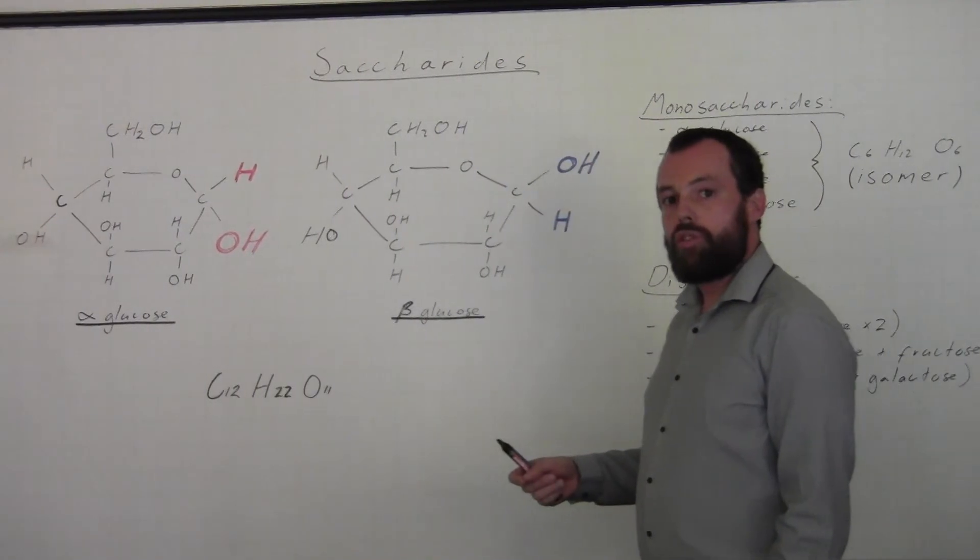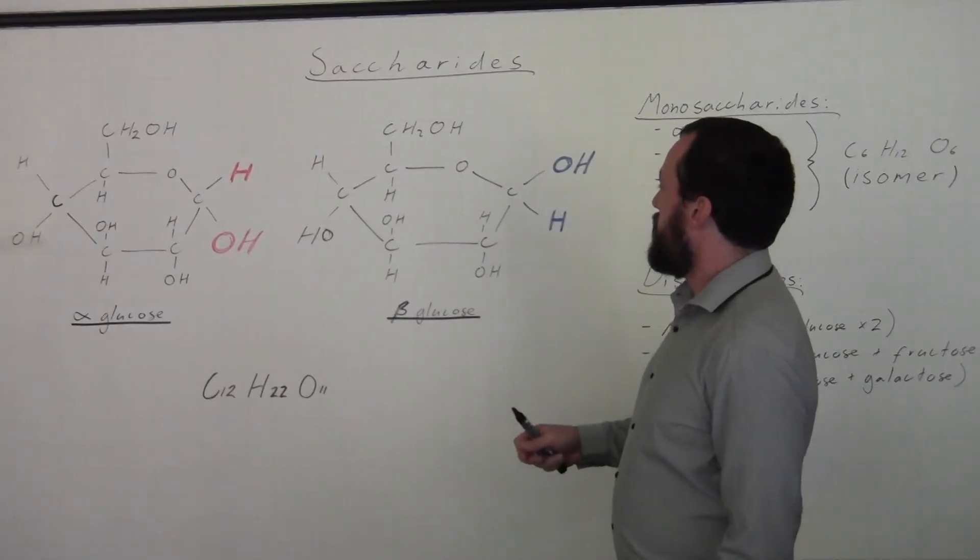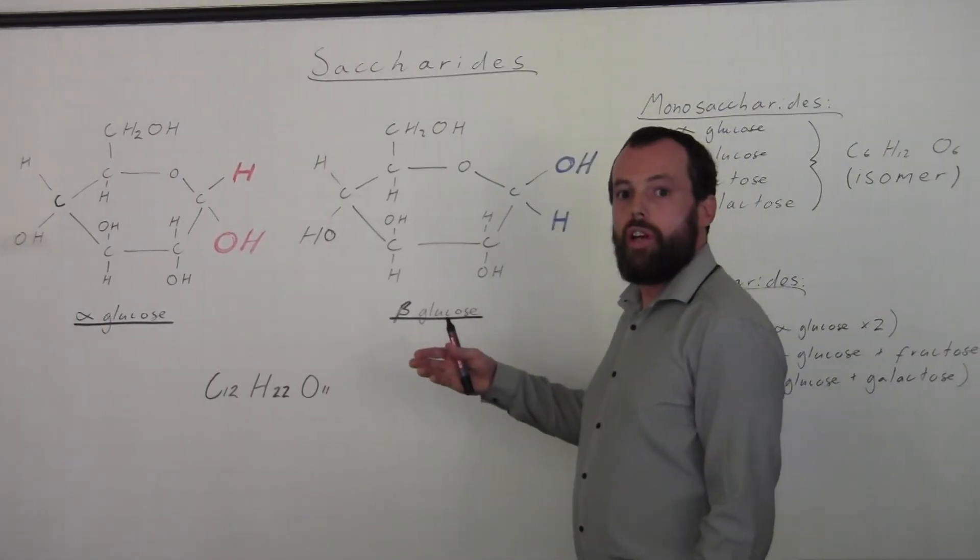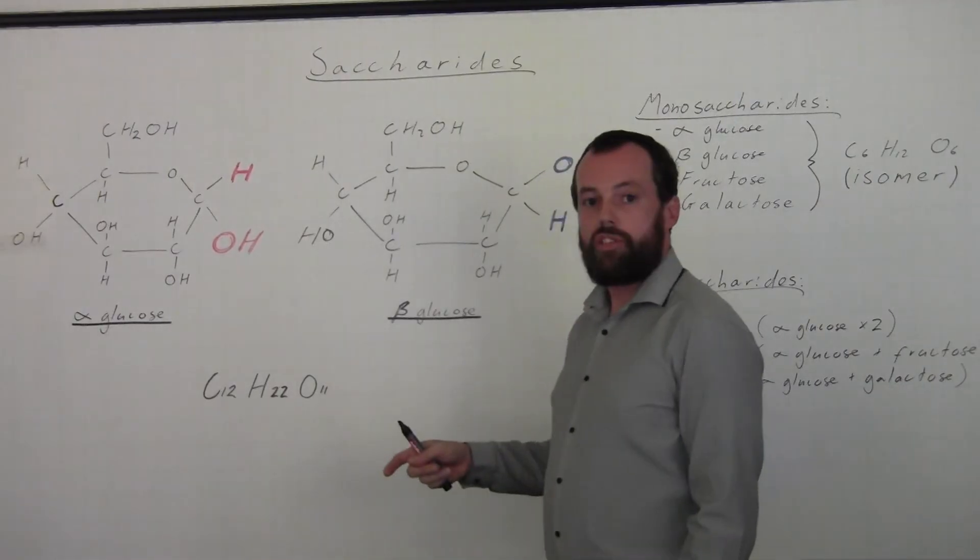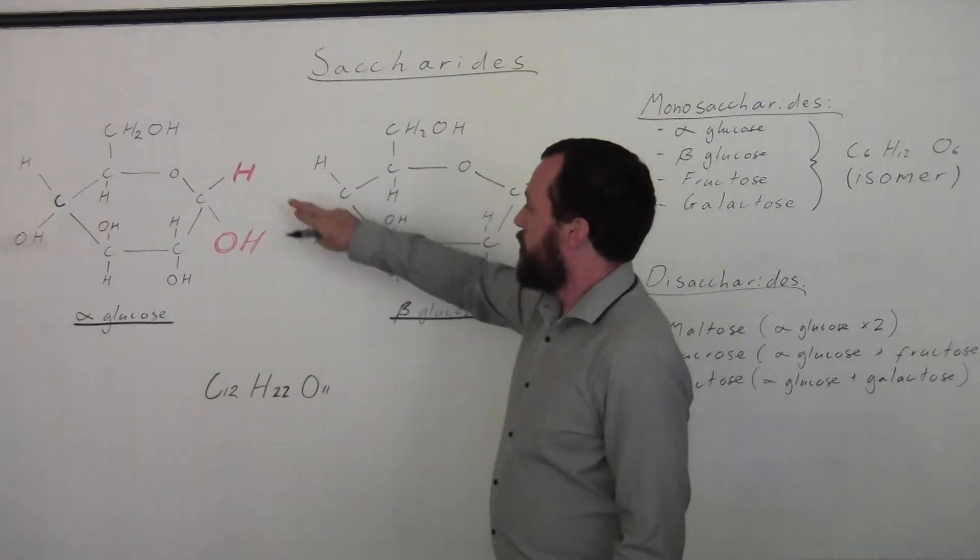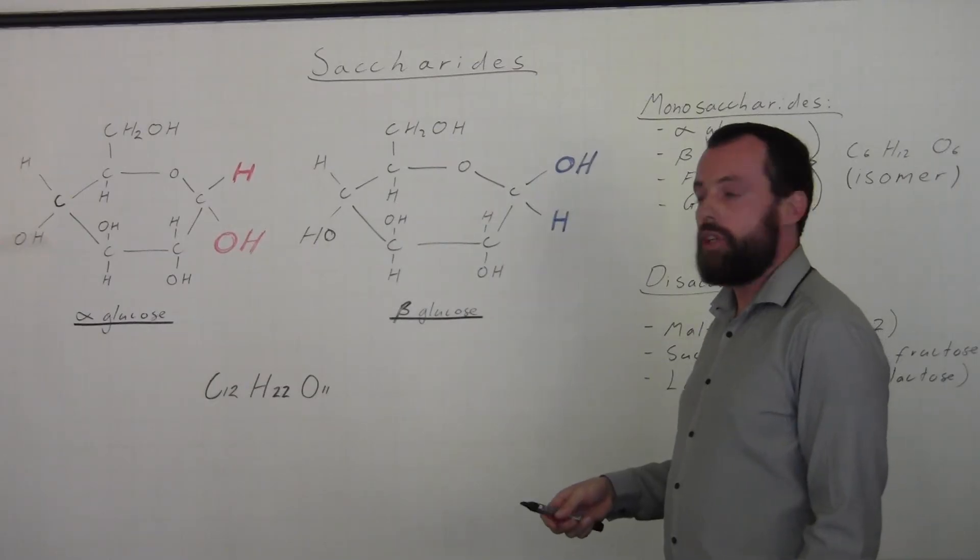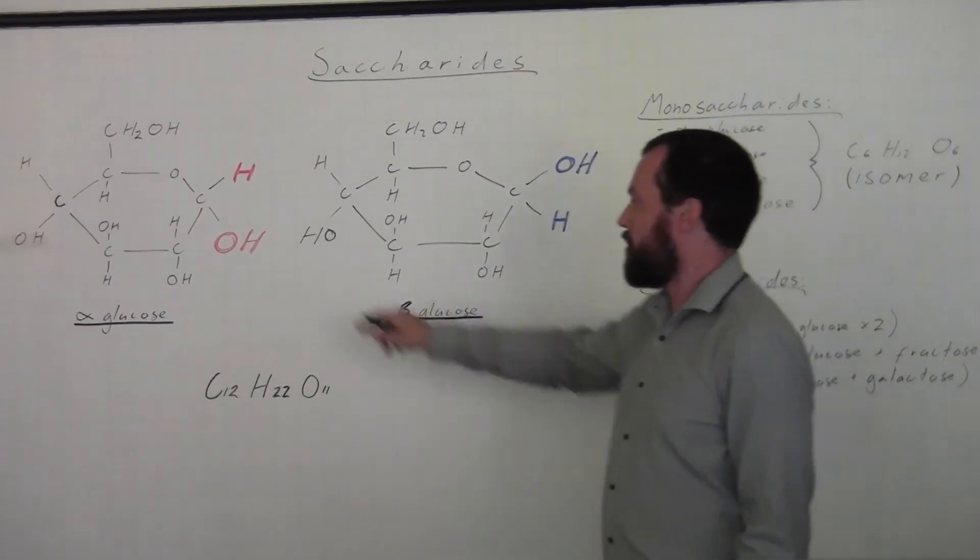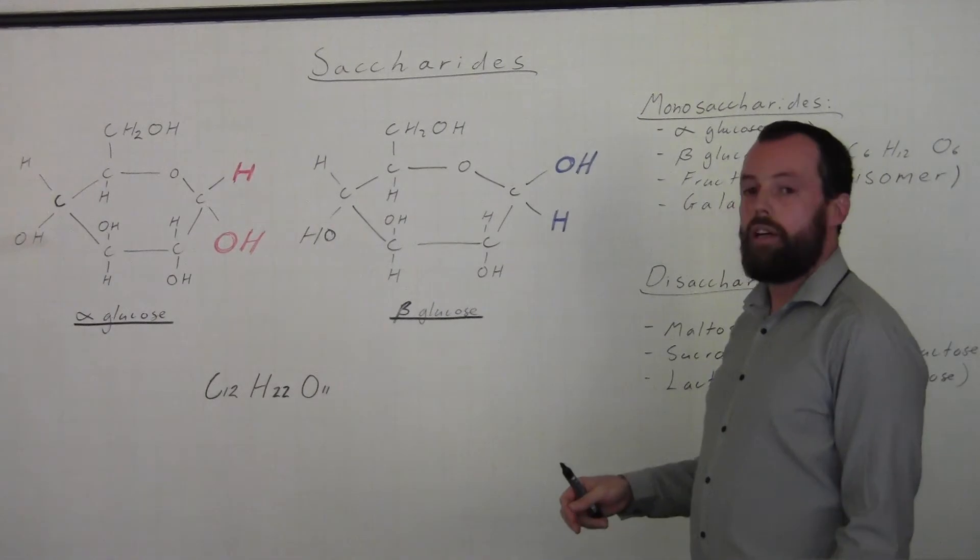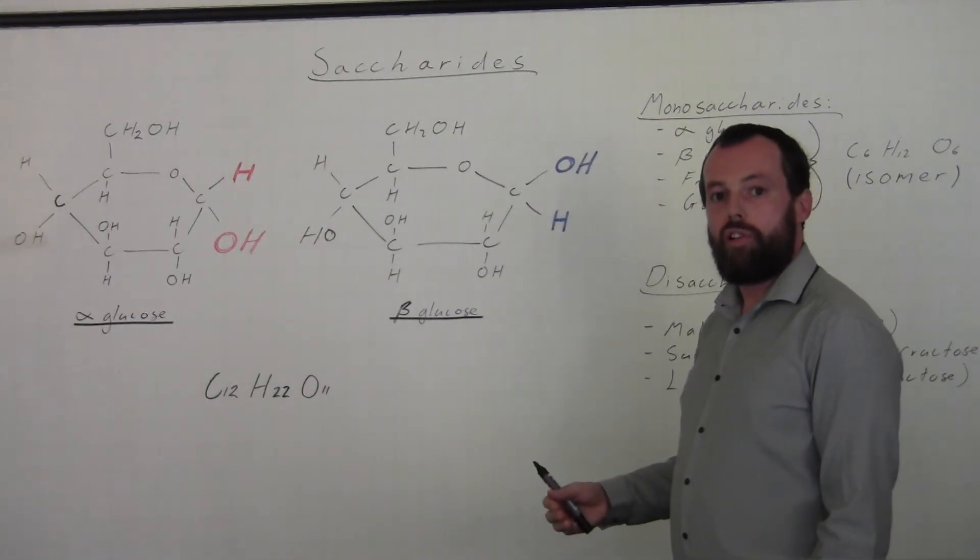Now I've chosen these two monosaccharides to illustrate how although they are both C6H12O6, we can see that there are very subtle differences in their structural arrangement with the H and the OH group, which I've picked out here and here. And it's this difference in structural arrangement which gives these monosaccharides different properties.